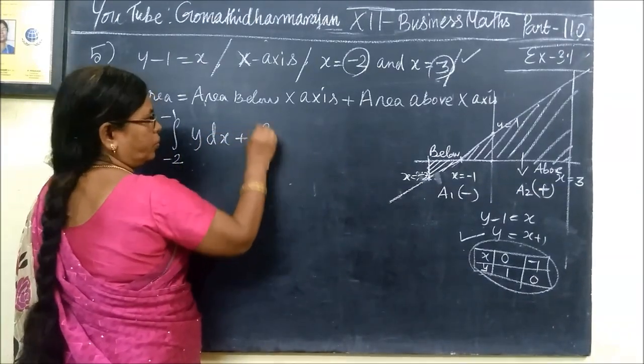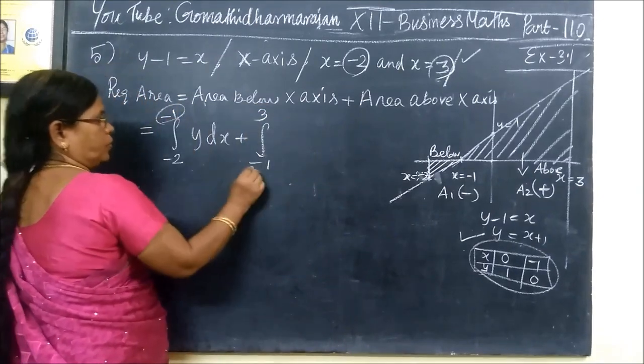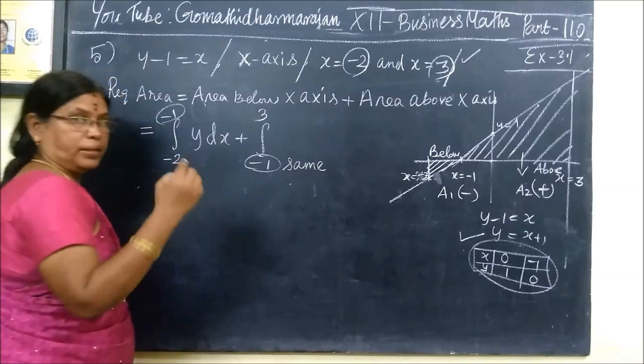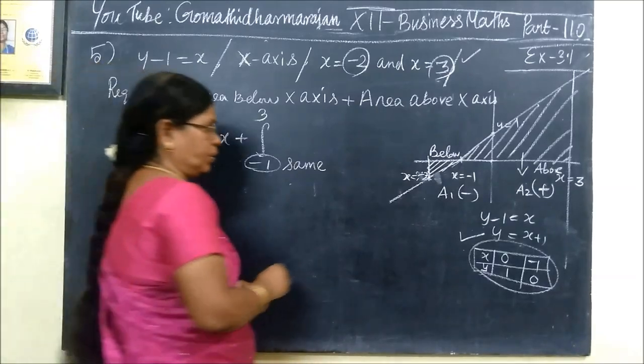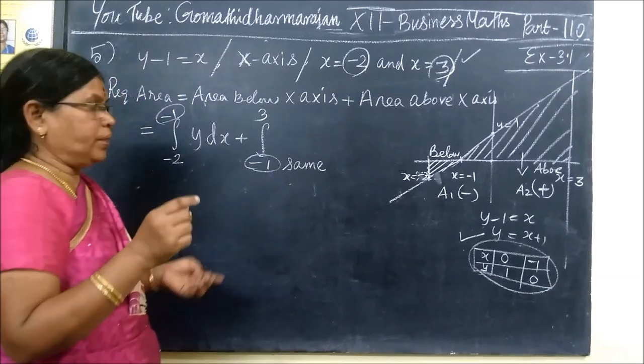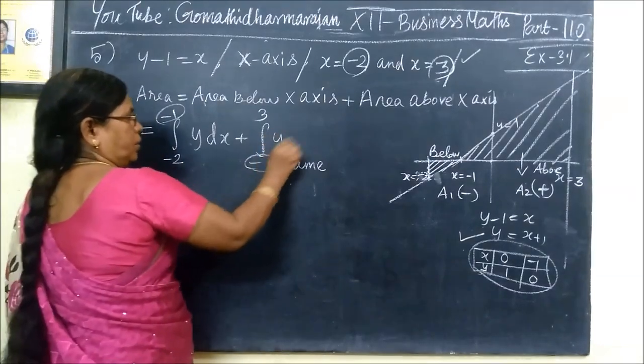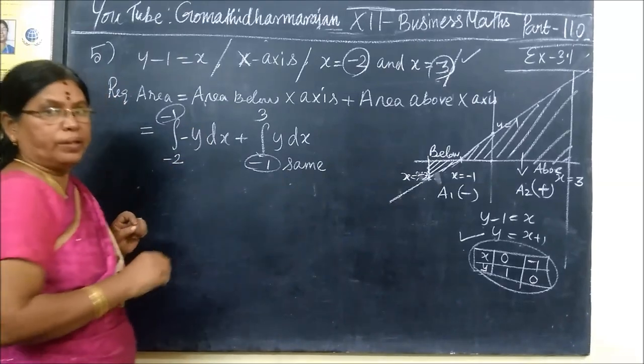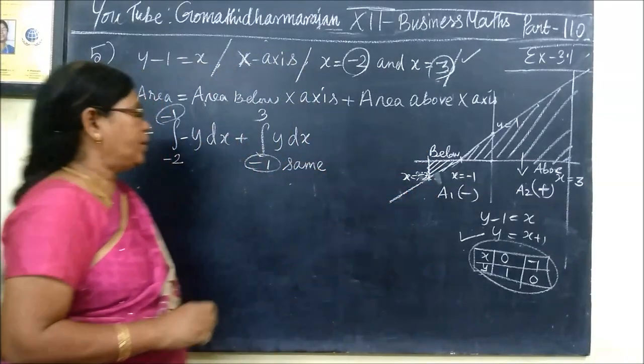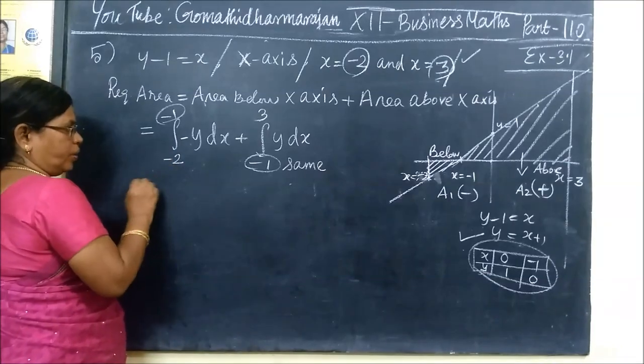This is minus 1 to 3. The limit is correct, but the area is negative. This is below, so it's minus. Below is minus. If it's minus, we add a negative sign here.